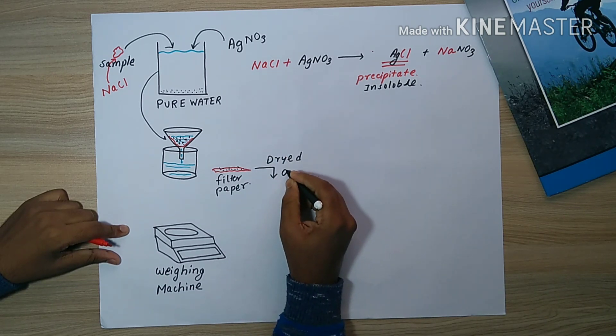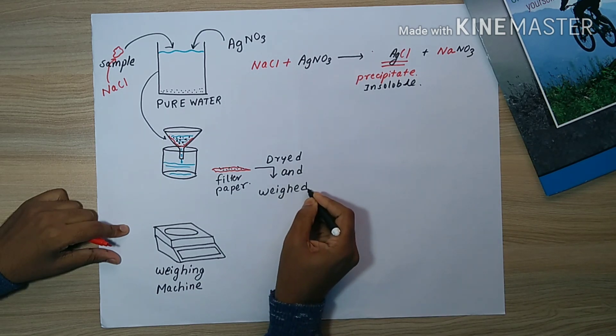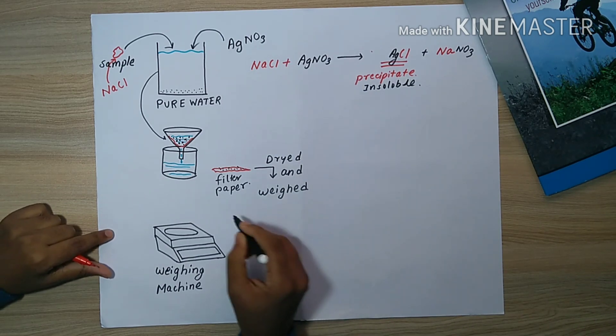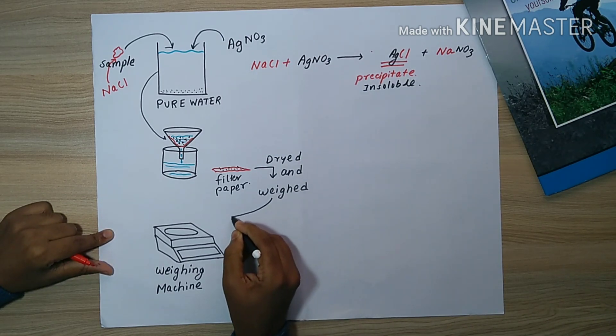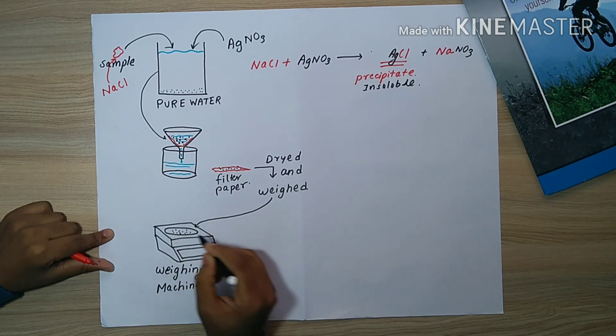Drying is the fifth step - dried and weighed, and weighing is the last step. Now it is dried and then weighed onto a weighing machine.